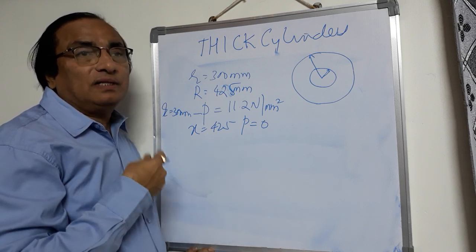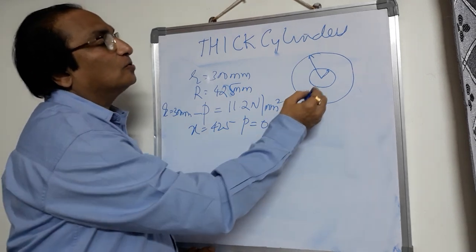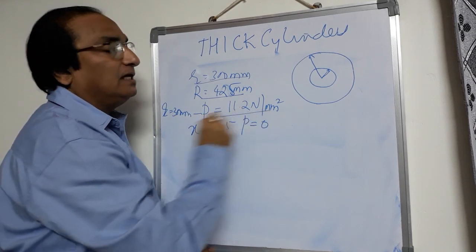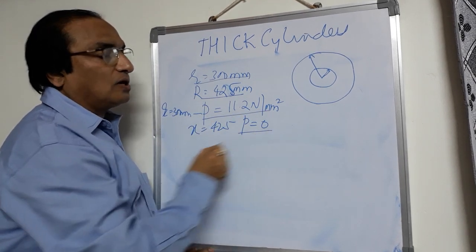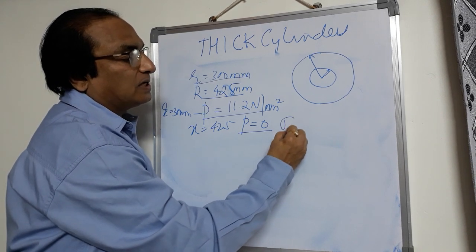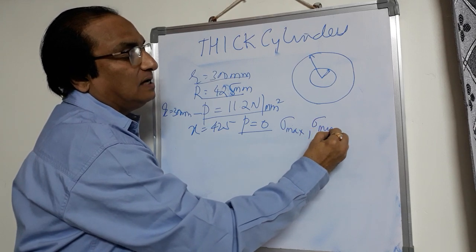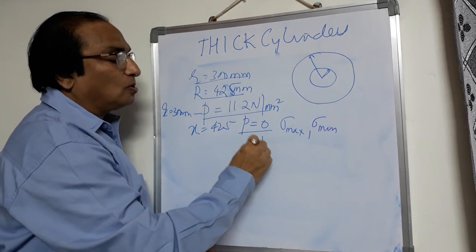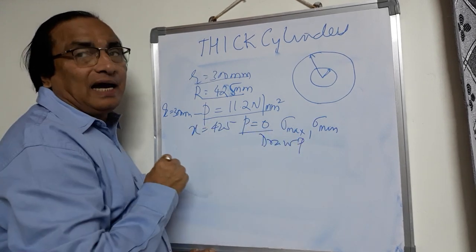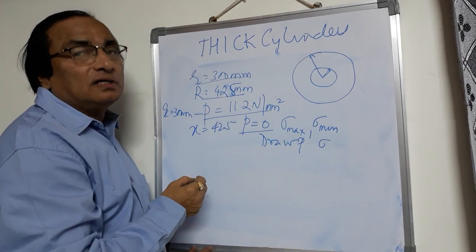Once you know A and B, you can determine the hoop stress at any point. The data given is inner radius, outer radius, and the inner pressure. Indirectly the outer pressure will be zero. You are required to find out the maximum hoop stress — that is on inner face — and hoop stress on the outer face, that is the minimum. And you will have to draw the radial pressure diagram and the hoop stress diagram.